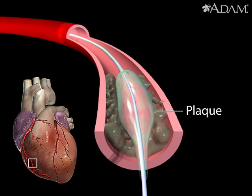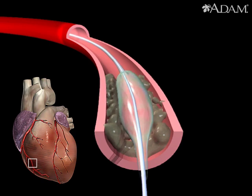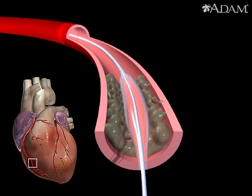If the blockage is not major, it may be possible to correct the problem by inflating the balloon several times. This will compact the plaque against the wall, widening the passage and letting blood flow through.